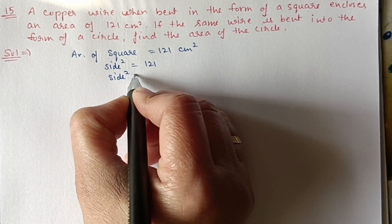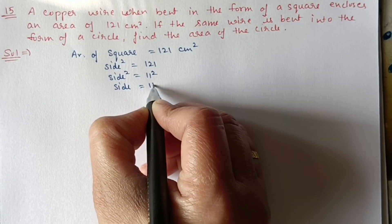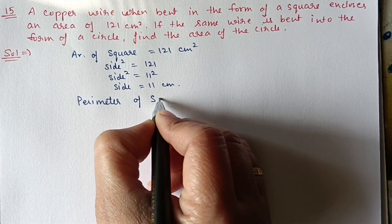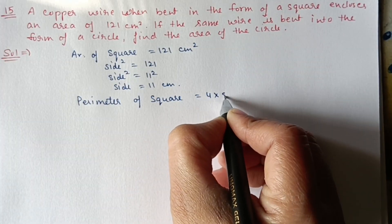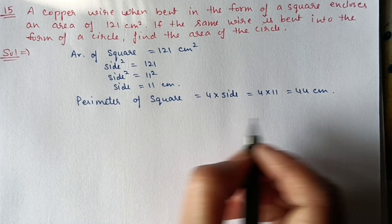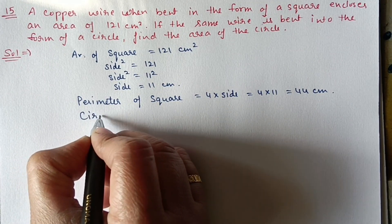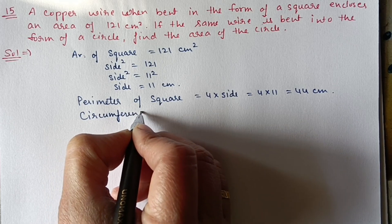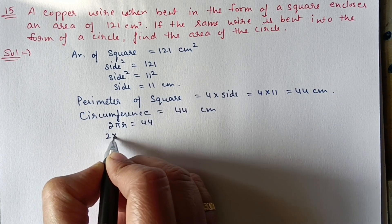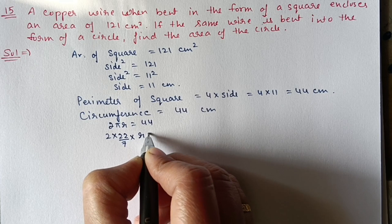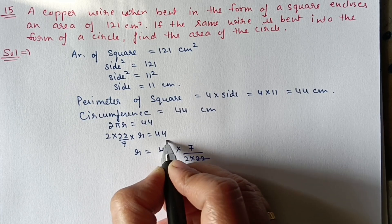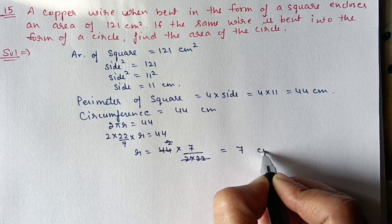Perimeter of square = 4 × side = 4 × 11 = 44 centimeter. This 44 centimeter will be the circumference of the circle. So circumference = 2πr = 44. That is 2 × 22/7 × r = 44, so r = 44 × 7 upon 2 × 22. Cancelling, r = 7 centimeter.